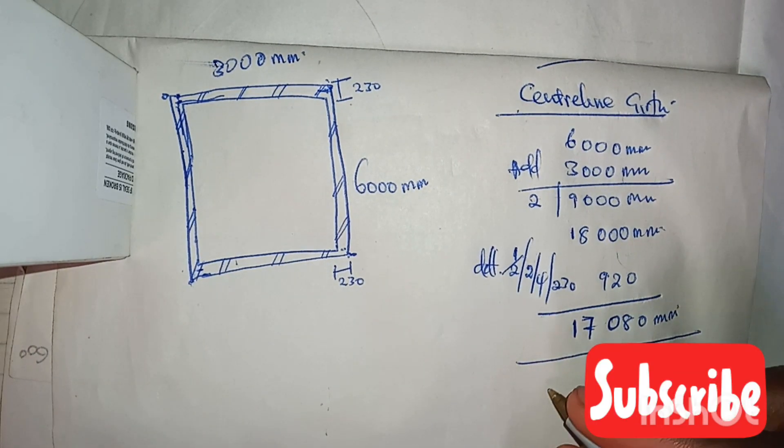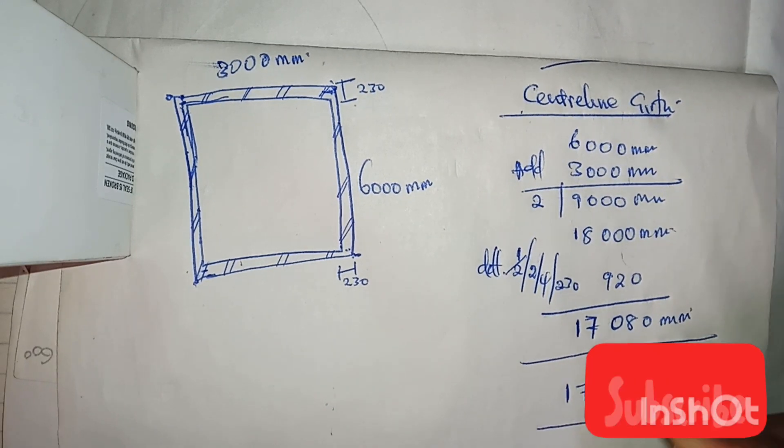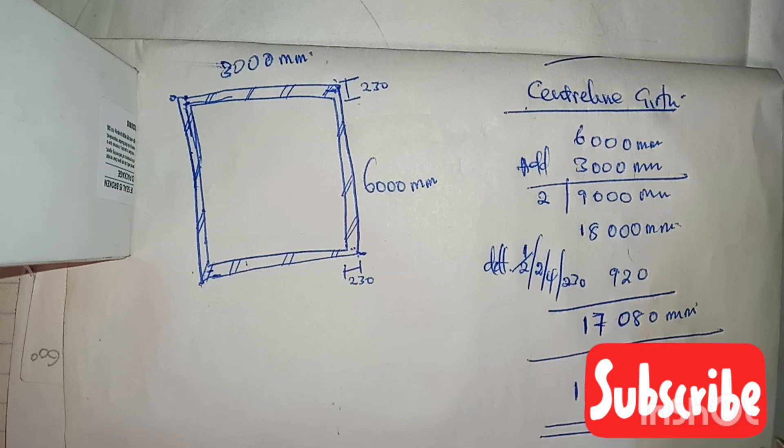So our center line girth would be 17.08 meters. This would be our center line girth. It's very simple.